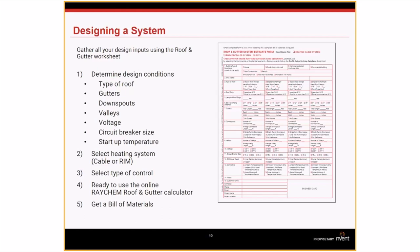Also check whether there are breaker size limitations if the panel doesn't have sufficient room for the full system. Determine whether your customer wants a cable system or a RIM system, and consult them on controller type — ambient control sensing air temperature, or a moisture-temperature controller that energizes the heating cable throughout winter. Once you have all this information, you're ready to use the Raychem Roof and Gutter Calculator to get your full bill of materials.